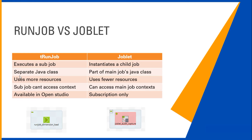When you use a tRun Job and call multiple sub jobs, each sub job will be a separate Java class file. In contrast, with Joblet it is just one Java class file, because it's a part of the main job. Furthermore, tRun Job uses more resources since it's a different class file — a separate JVM is consumed to execute the sub job. Joblet uses fewer resources because it's part of the main job.